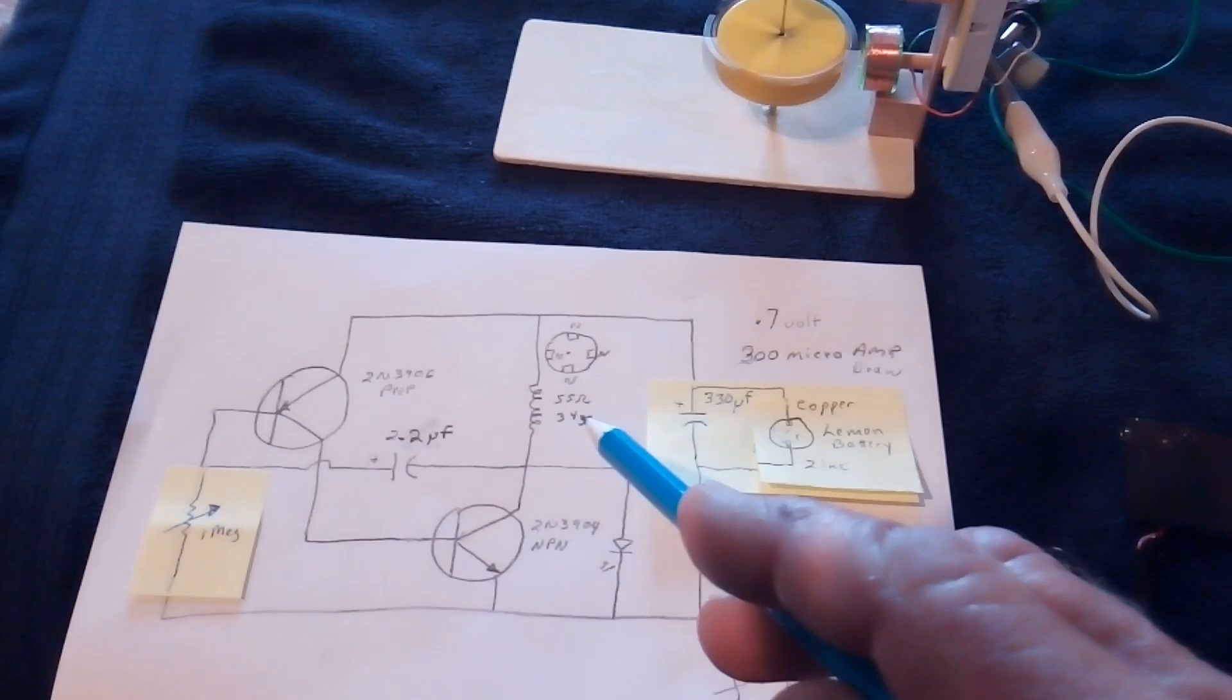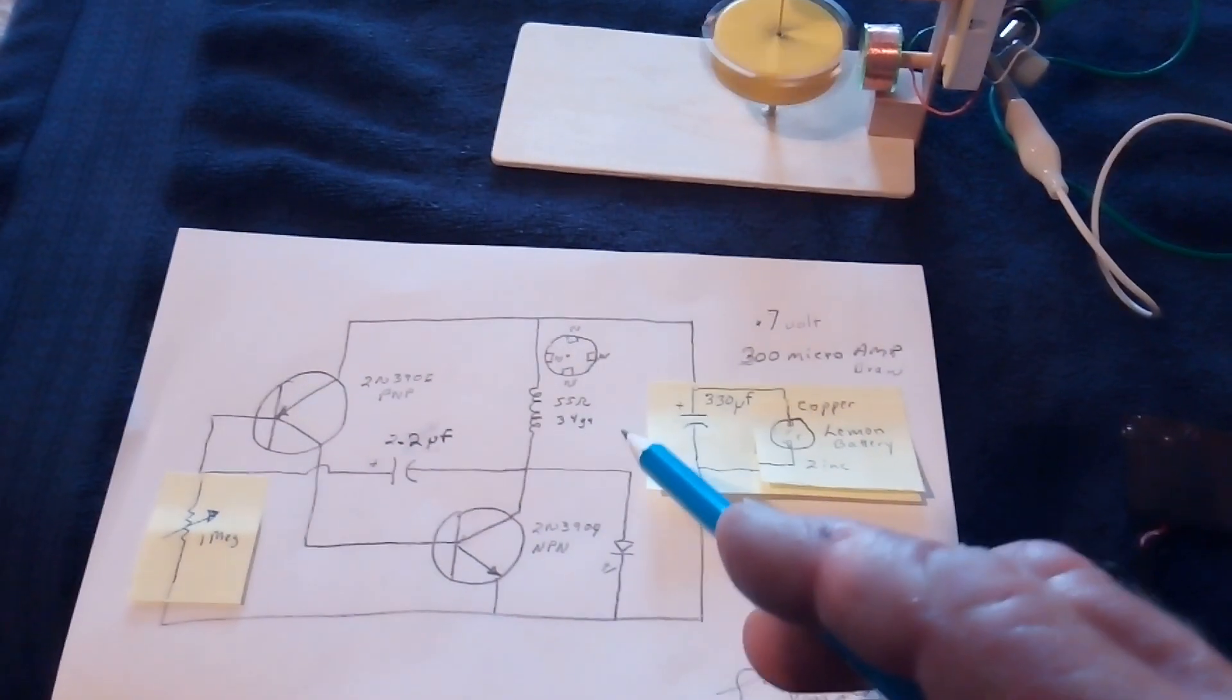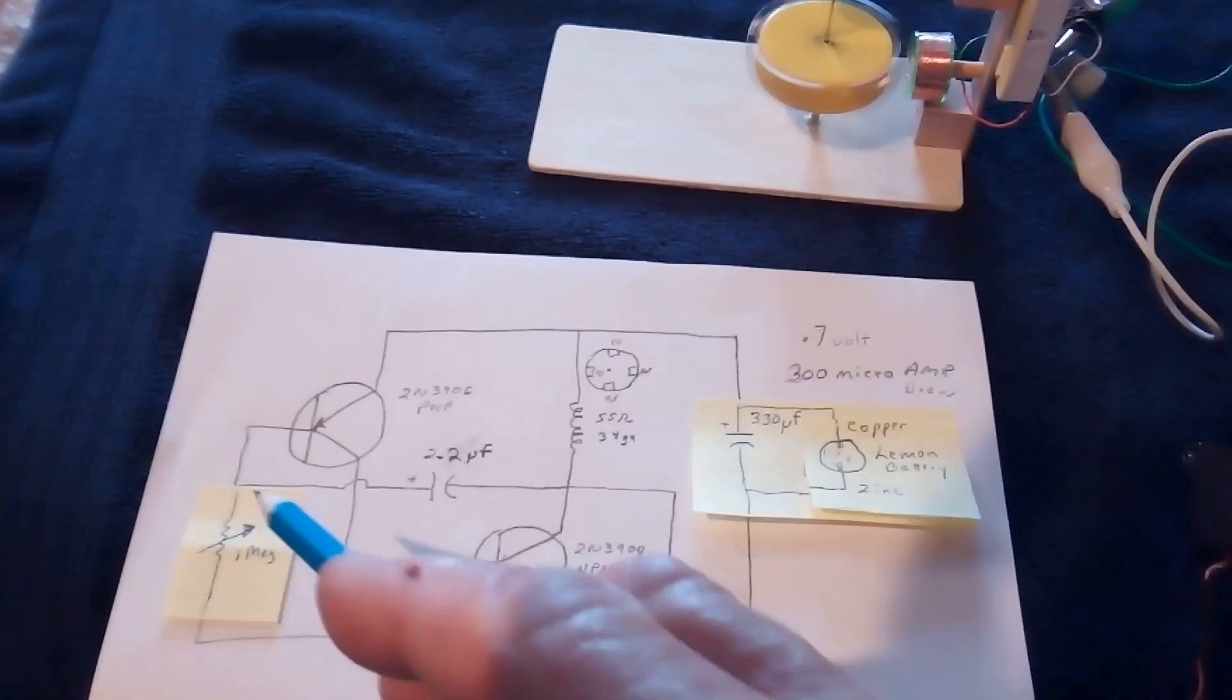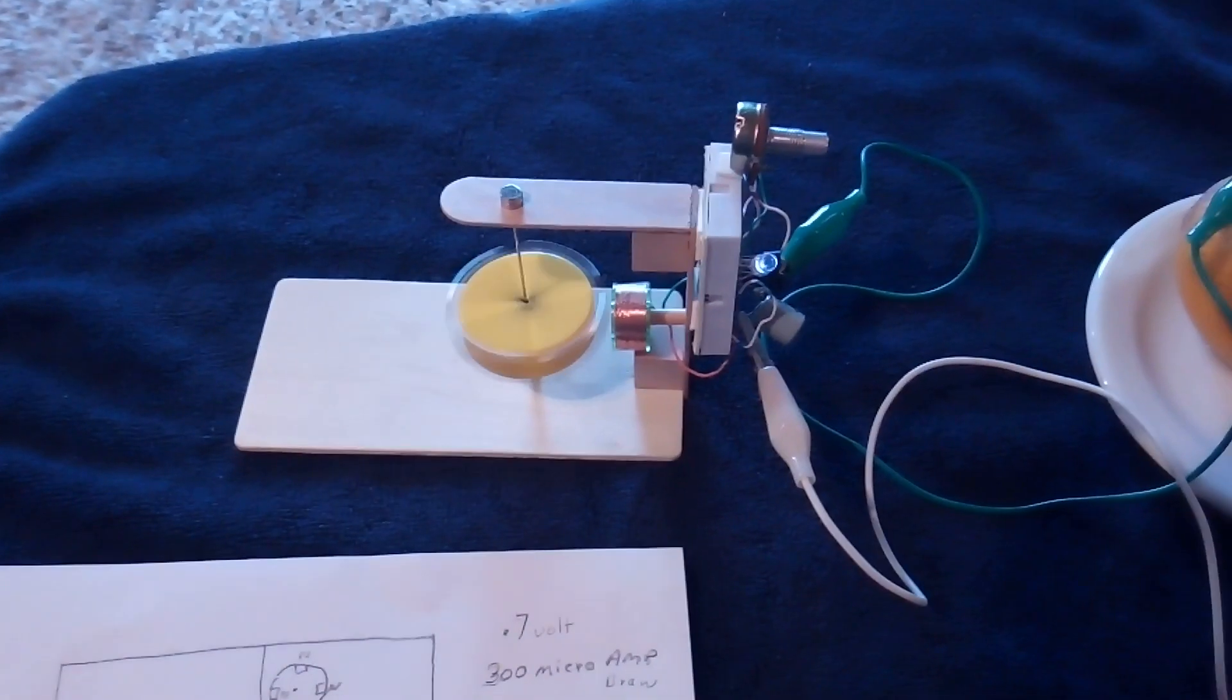Instead of the standard inductor I made a coil of 34 gauge wire and put a potentiometer in here. Then tried different power sources and made a motor out of it. Today I've got it running on a lemon.